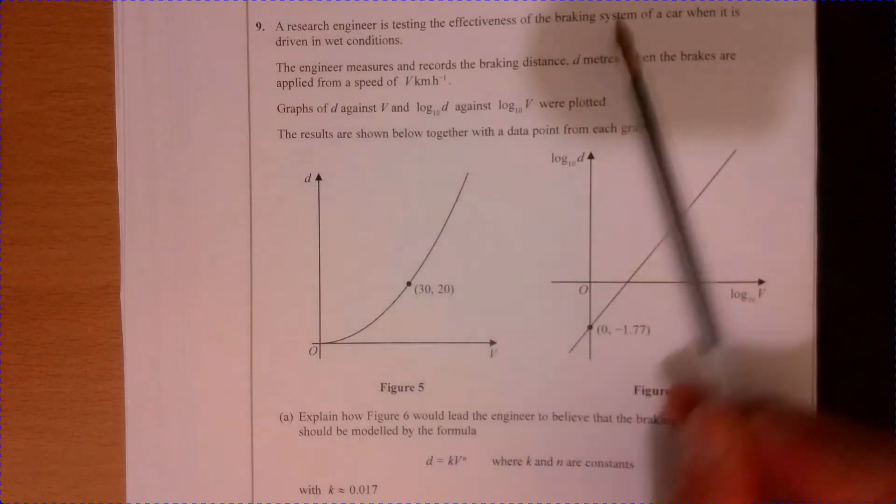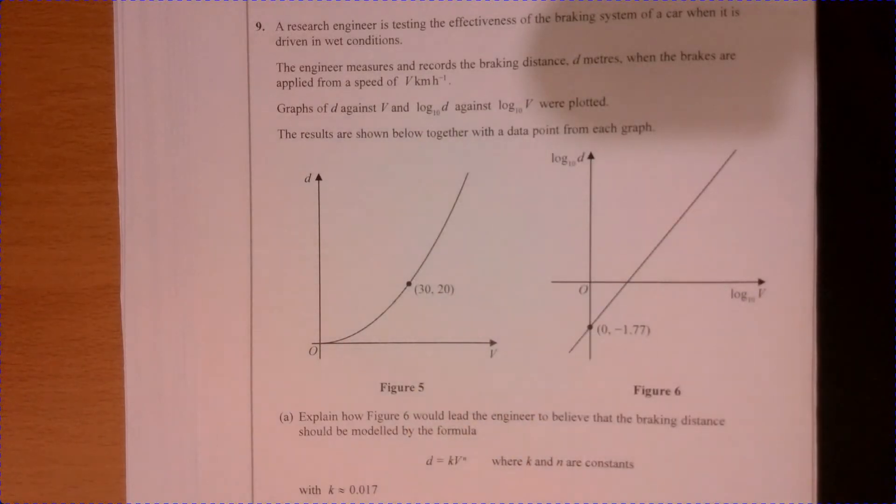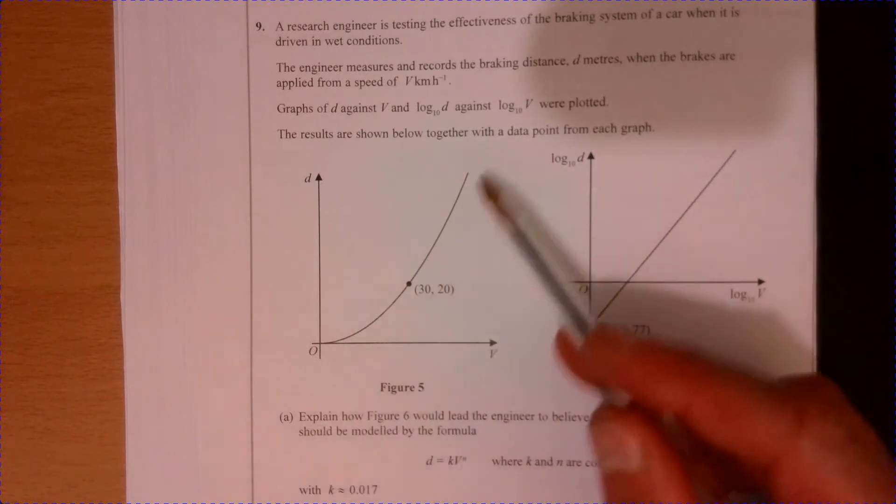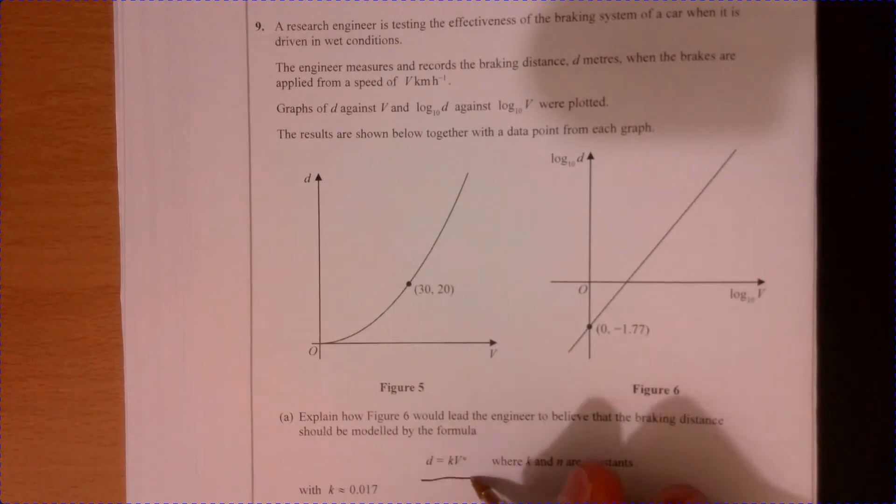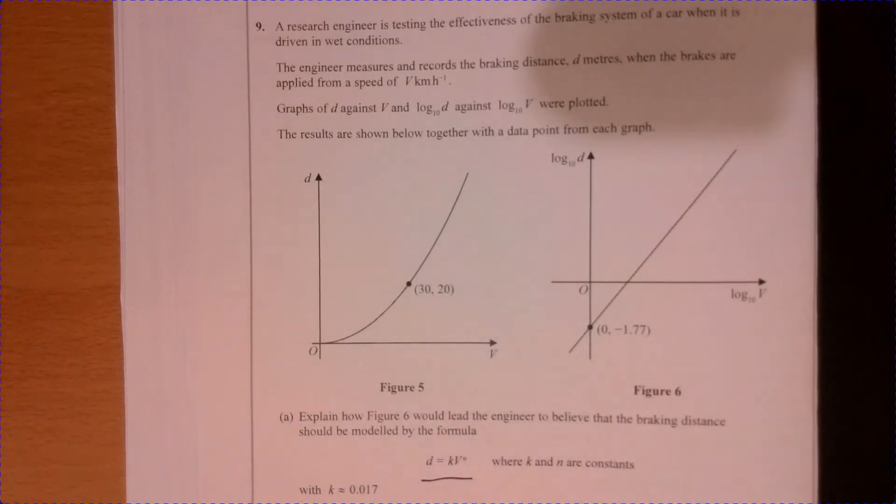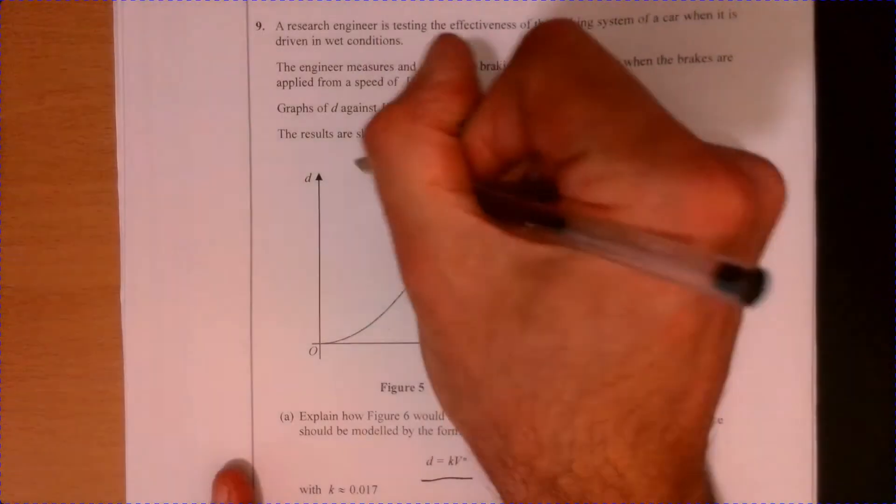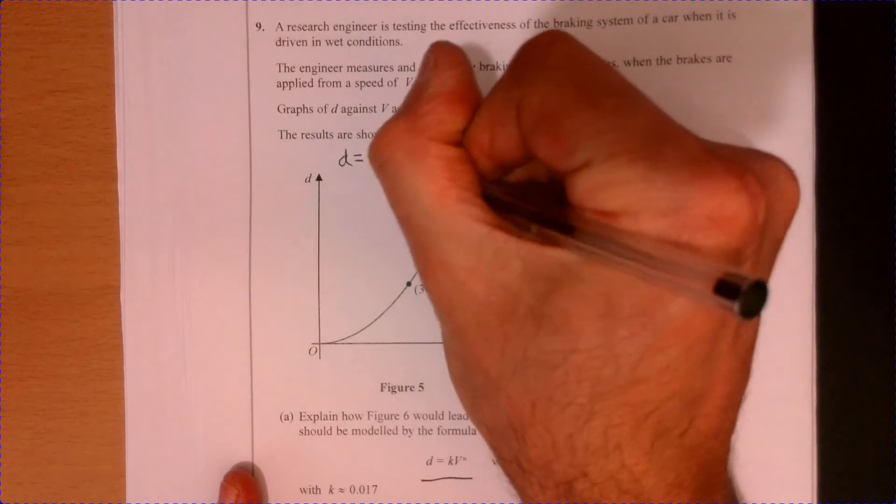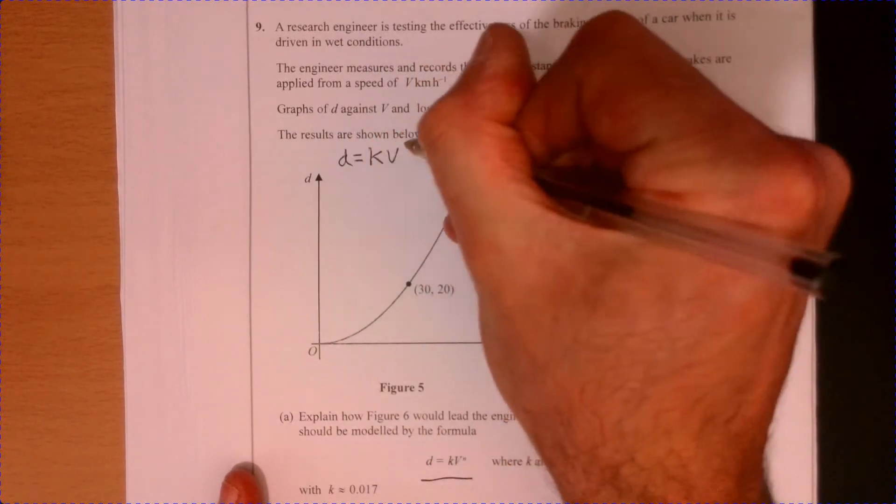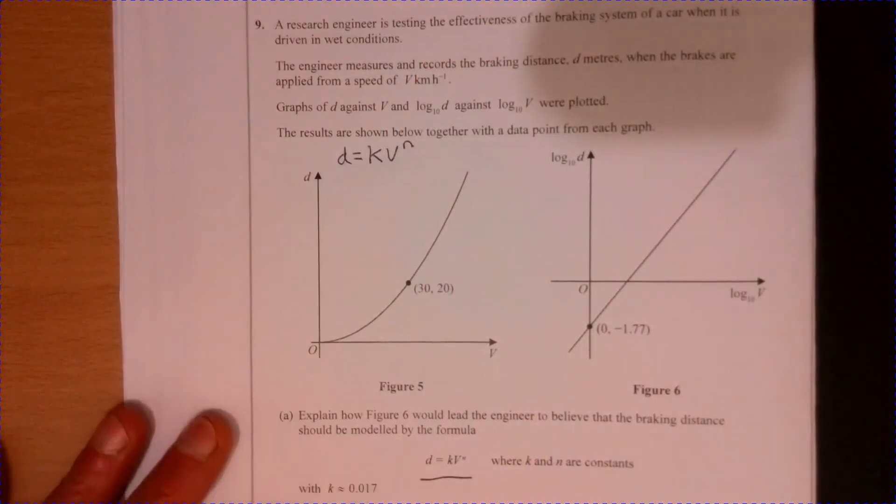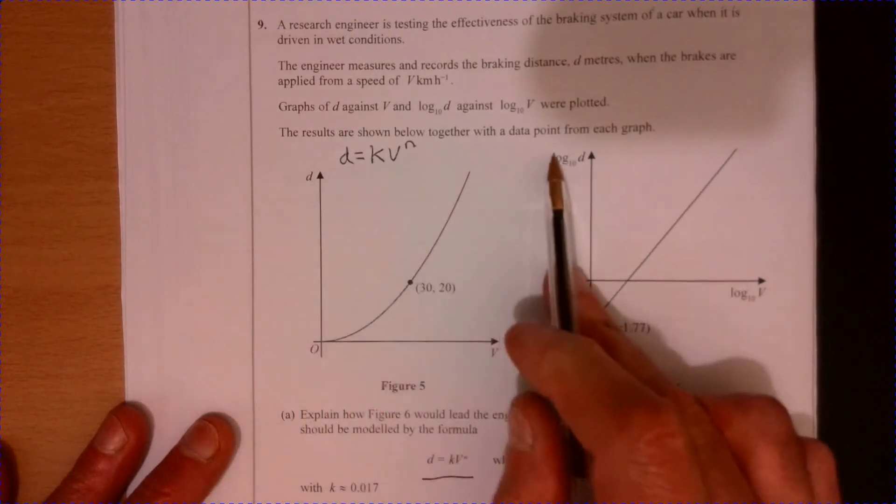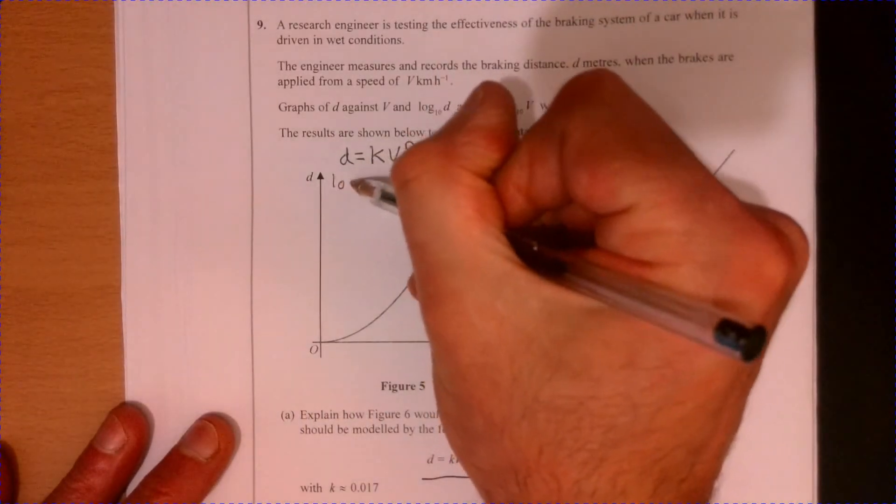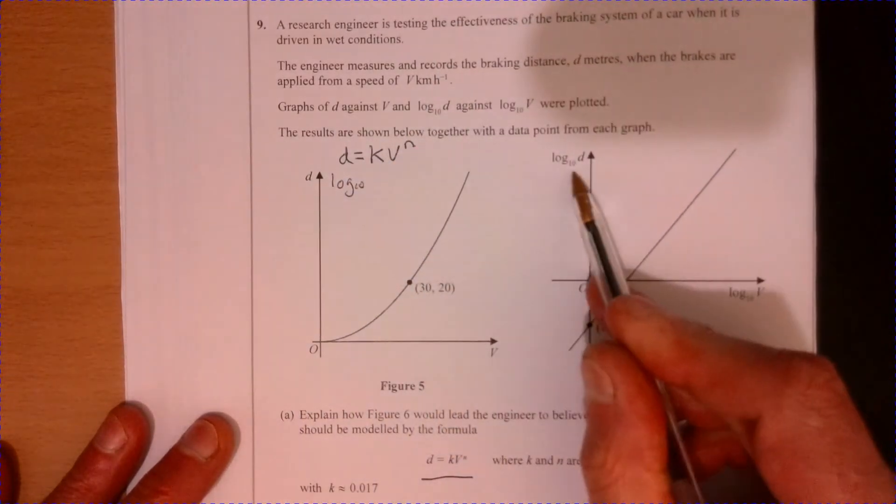Question 9. So hopefully you've had a good read of this question. We're looking to model this using this equation. I'm going to write mine up here so I've got a little bit of room and I can show you. Probably the easiest thing to do is to think about taking logs of both sides because this is talking about log of both sides.